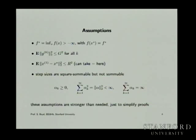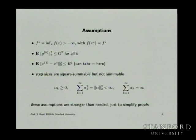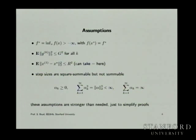We'll take the expected value of |x1 minus x star| less than R. Now x1 could just be a fixed number, in which case you don't even need this expected value.